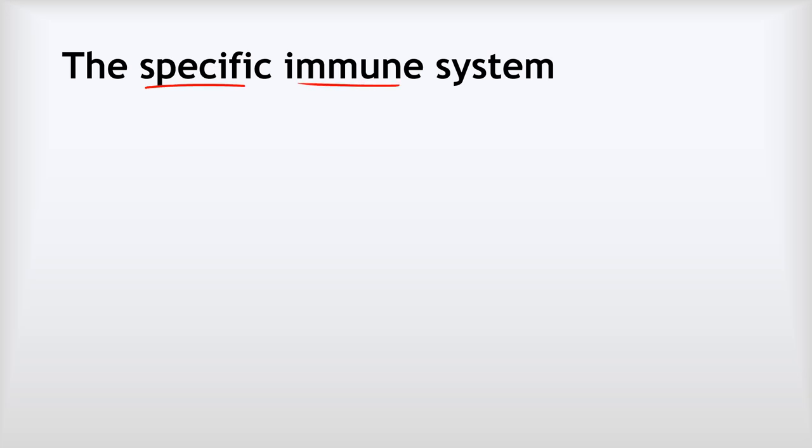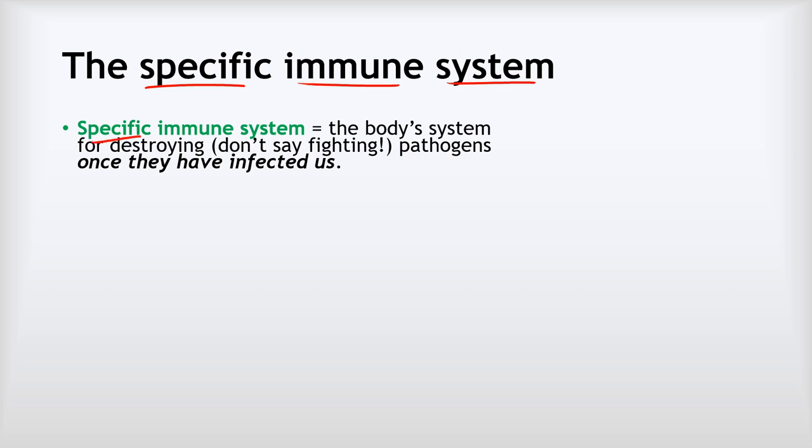Despite the best efforts of our chemical defences and physical barriers, some pathogens will still make it into our bodies and infect us. Now it's time for the specific immune system to kick into action to destroy those pathogens. The specific immune system is the body's system for destroying or killing pathogens once they've infected us. Do not say 'fighting' — that's not a scientific term. This is about the body trying to destroy pathogens that are causing harm.